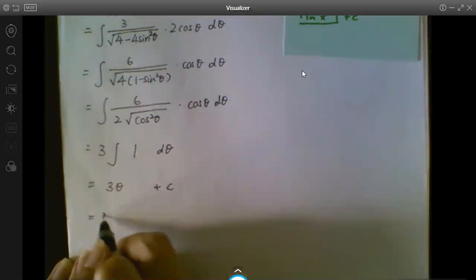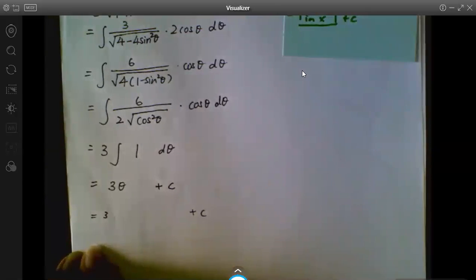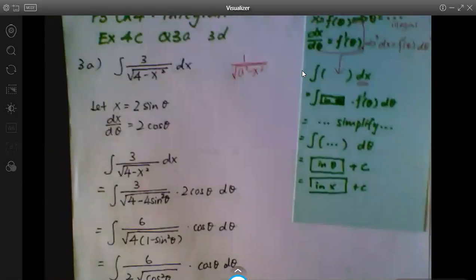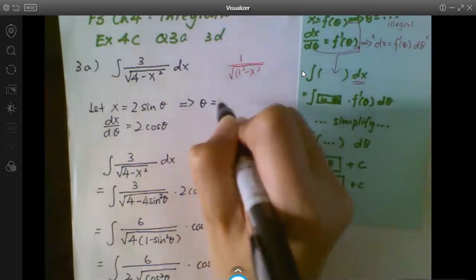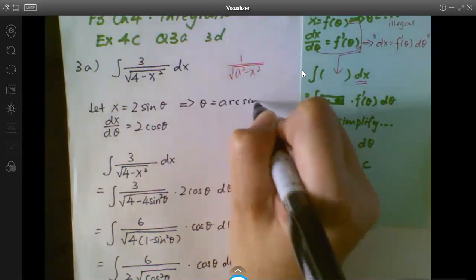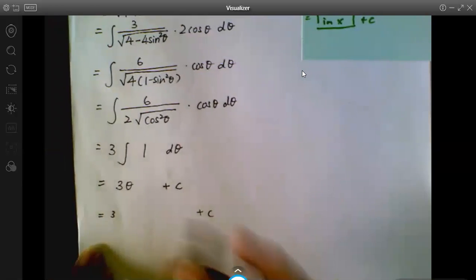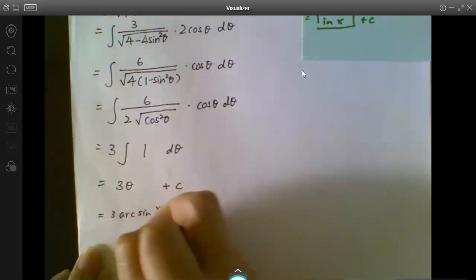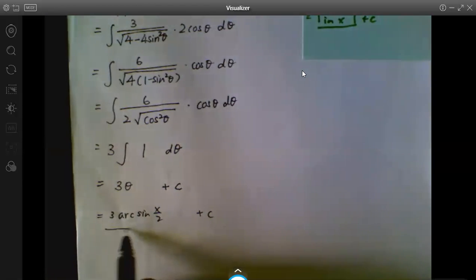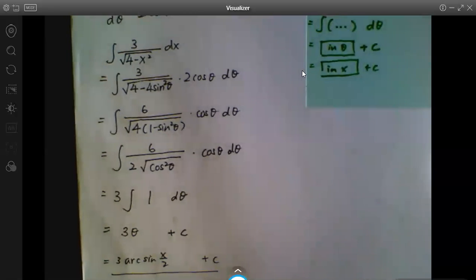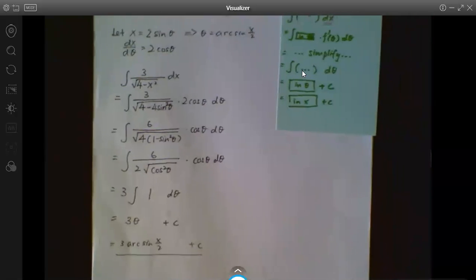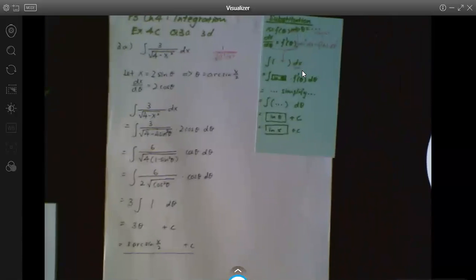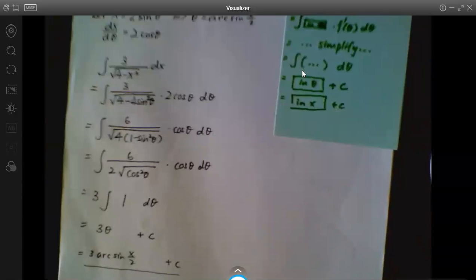Now we need to substitute back our theta. Something plus c. Let's go back to the very top. Now if x equals 2 sin(θ), then theta will be arcsin(x/2). Okay, I'll put that in: 3 arcsin(x/2) plus c. And we're done. This is the full solution.